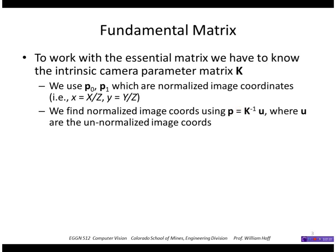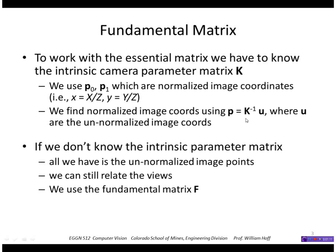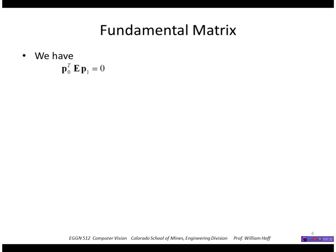We find normalized image coordinates by multiplying K inverse times U, where U is the unnormalized image coordinates. But if we didn't know the intrinsic camera parameter matrix K, all we have is the unnormalized image points. But we can still relate the views using the fundamental matrix F.